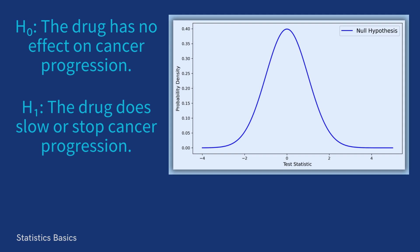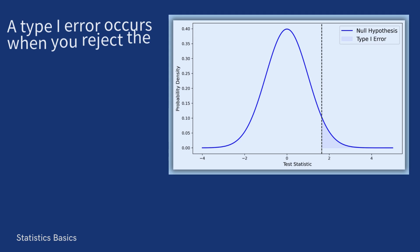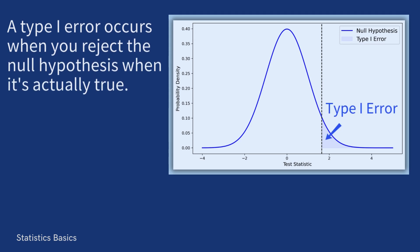This is where the concepts of type 1 and type 2 errors become crucial in interpreting your results. A type 1 error occurs when you reject the null hypothesis when it's actually true. This means you concluded that the drug works while in reality it doesn't. This can lead to the approval of ineffective treatments, wasting resources, and potentially harming patients.